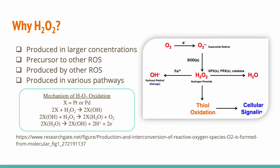Why hydrogen peroxide in particular? Well, hydrogen peroxide tends to be produced in larger concentrations. It is also a precursor to other ROS, as you can see in this diagram. Hydrogen peroxide can become the hydroxyl radical, and it is also produced by other ROS — the superoxide radical can produce hydrogen peroxide. It is produced in various pathways, and we actually know the mechanism of peroxide oxidation, as shown here with these reaction schemes. Since we know these mechanisms of peroxide oxidation on platinum and palladium surfaces specifically, we can apply a potential or voltage in order to induce the production of ROS and gain an electrochemical response, and by doing so we can detect the hydrogen peroxide in solution.